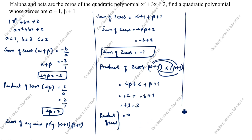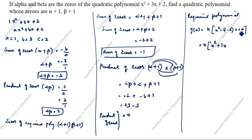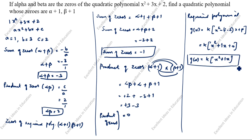What is the new required polynomial? The formula is: g(x) equals k times open bracket x squared minus (sum of zeros) times x plus (product of zeros). Substituting sum of zeros as minus 1 and product of zeros as 0: g(x) equals k times open bracket x squared plus x. This is the new required polynomial.